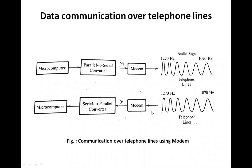The serial input/output technique can be used to send data over long distances through telephone lines. However, telephone lines are designed to handle voices, and the bandwidth of a telephone line ranges from 300 Hz to 3300 Hz. A digital signal with a rise time in the nanosecond range requires a bandwidth of several megahertz, so conversion is necessary.